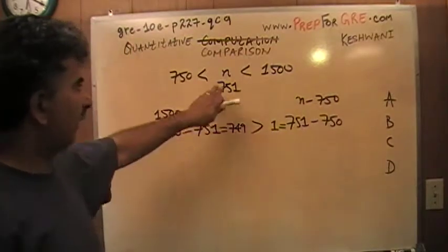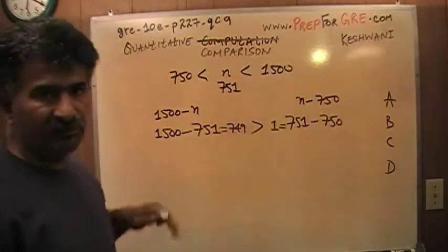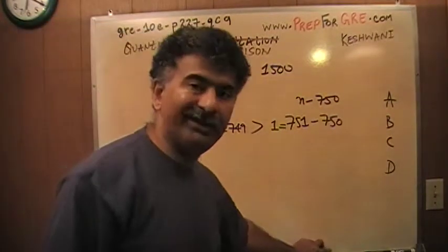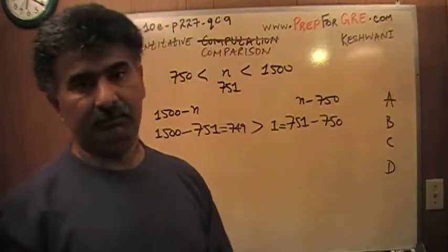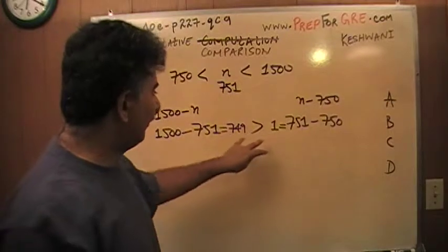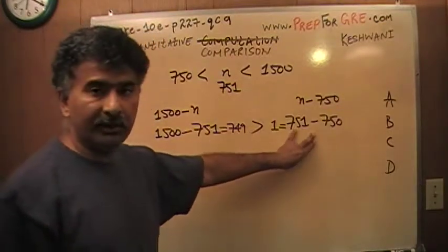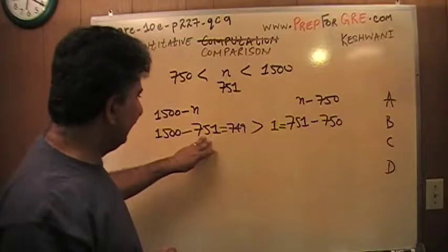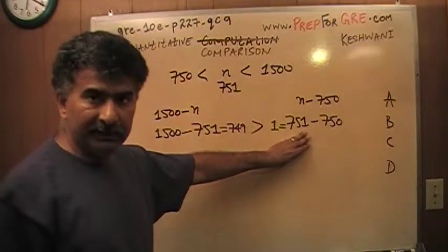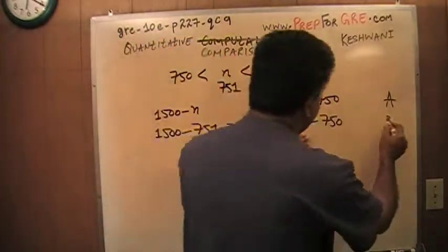The work that I have done so far by plugging in 751 for N, what does it tell me? It does not tell me what the answer is. It only tells me what the answer is not. Since I have found one instance where this quantity is bigger than this quantity, the quantity in column A is bigger than the quantity in column B, it tells me that B cannot be the answer.